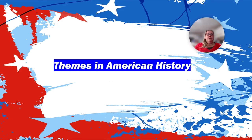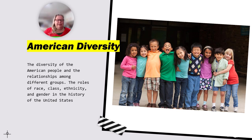We're going to explore the 12 themes of American history briefly here. Our first theme is American diversity. America is called the great melting pot for a reason — we are built as a nation of legal immigrants who each came here seeking a new and better life for themselves and their family. The diversity of the American people and the relationships among different groups, the roles of race, class, ethnicity, and gender in the history of the United States, constitute our diversity.